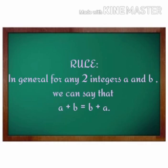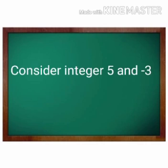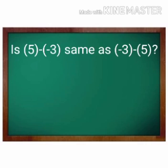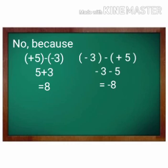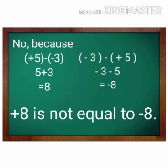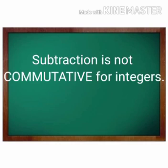Now let us check for subtraction also. Consider the integers 5 and minus 3. Is 5 minus (minus 3) the same as minus 3 minus 5? No, because 5 minus (minus 3) is equal to 5 plus 3 is equal to 8. And minus 3 minus 5 is equal to minus 8. Therefore, plus 8 is not equal to minus 8. So we can say subtraction is not commutative for integers.